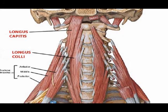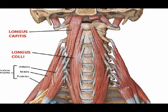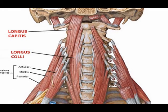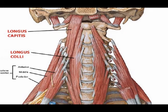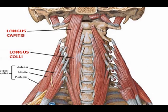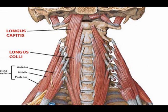The longus capitis originates on the anterior tubercles of the transverse processes of C3 through C6. It inserts in the inferior surface of the basilar portion of the occiput, and its concentric action when contracted bilaterally is cervical flexion.